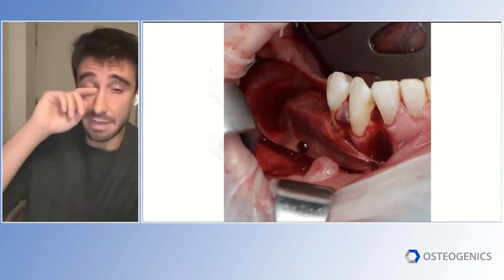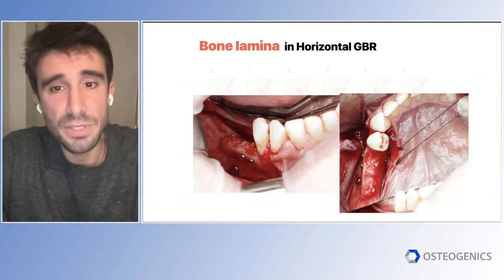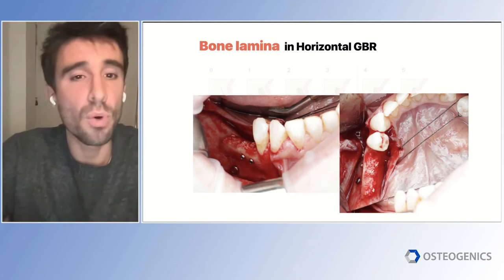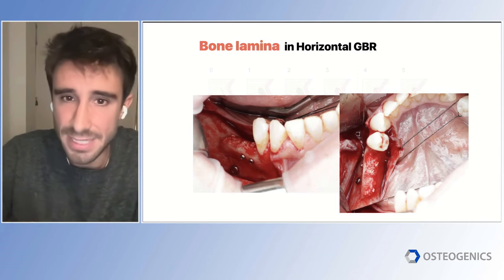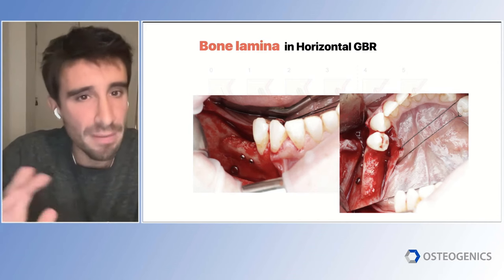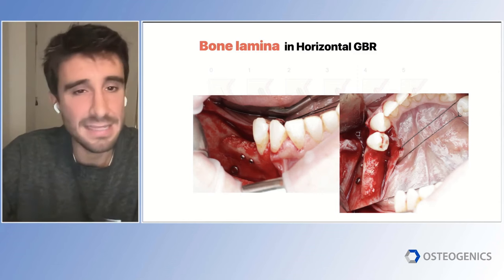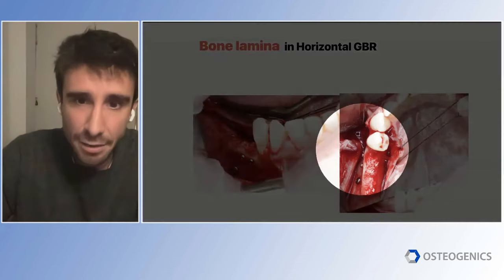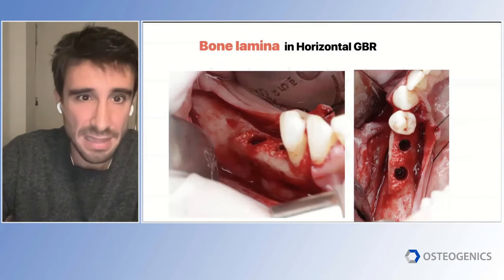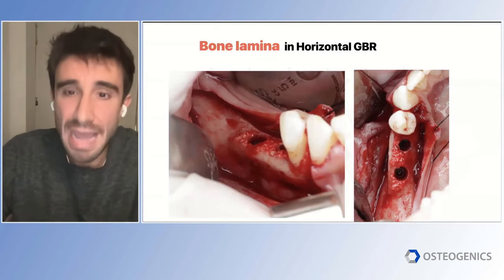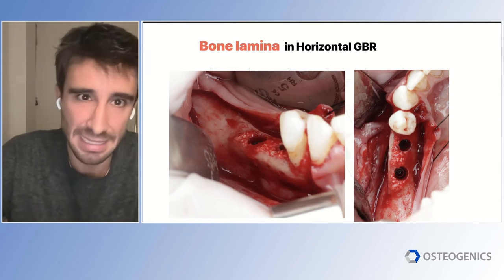We placed a mixture of xenograft and autograft and covered everything with a collagen membrane. Six months later, the difference compared to the sausage technique case is remarkable. We no longer have a pyramidal-shaped crest — we have a perfectly rectangular shape with very little remodeling. The final morphology is almost exactly what we intended to build. The crestal part has the greatest width, which is where we need it most around the implant connection, giving those implants the best bone environment to protect against peri-implantitis.